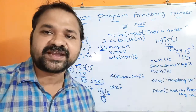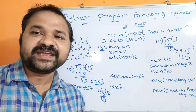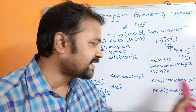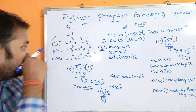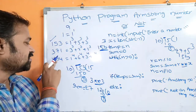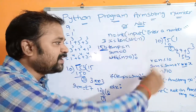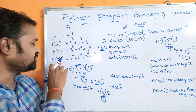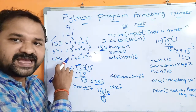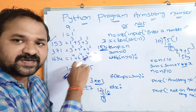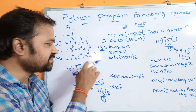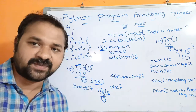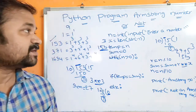Suppose if the number contains 4 digits, then the while loop will be repeated 4 times. In the first iteration, 4 power 4 will be calculated and added to sum. In the second iteration, 3 power 4 will be calculated and added to sum. This is how the Armstrong number program works.